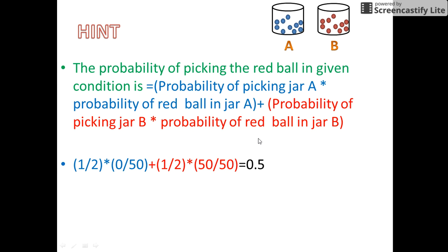Since there are two jars available to us, the probability to select any of the jars is 1 by 2. Now the probability to select jar A is half, multiplied by the probability of red balls in jar A — that is 0 by 50 since there are no red balls in jar A — plus the probability to select jar B, that is half, multiplied by the probability of selecting red balls from jar B, that is 50 by 50, since all 50 red balls are present in jar B. The probability now comes out to be 0.5.